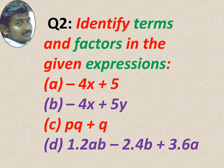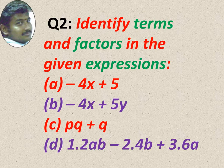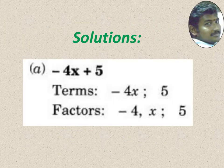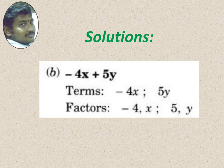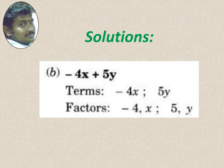Identify terms and factors in the given expressions. First: minus 4x plus 5. Two terms are there — minus 4x and 5. Factors of minus 4x are minus 4 and x; factor of 5 is just 5. Next: minus 4x plus 5y. Two terms — minus 4x and 5y. Factors of minus 4x are minus 4 and x; factors of 5y are 5 and y.